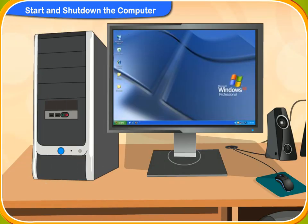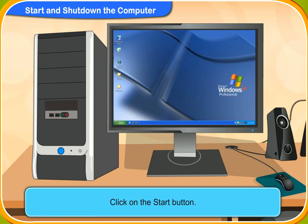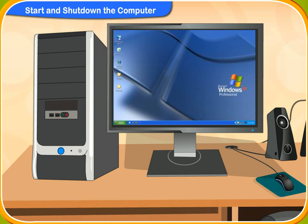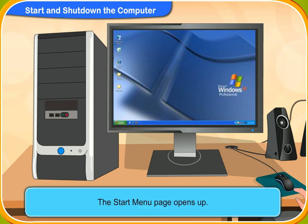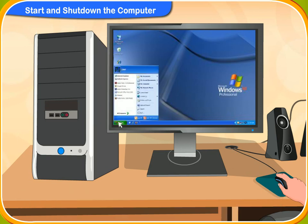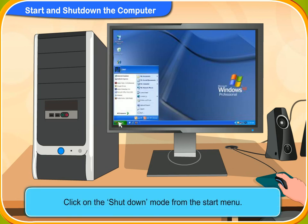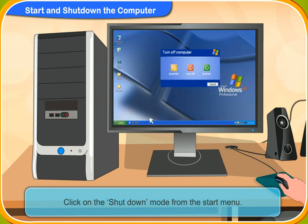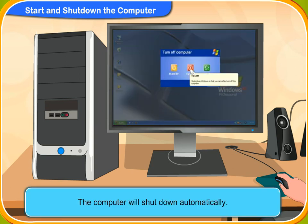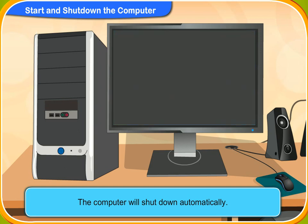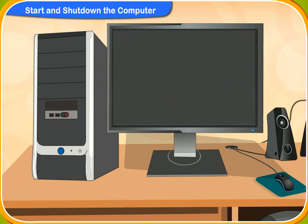To shut down the computer, first you have to click on the Start button on the screen. It is the button in the shape of the Windows logo. Click on it. Now choose the shut down option. If you click on it, then the computer will shut down. Oh, it is so easy. Yes, it is easy.